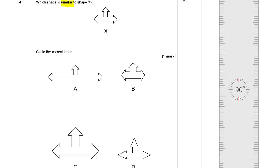Question 4: Which shape is similar to shape X? In mathematics, similar has a very specific meaning — it means exactly the same shape, but one is an enlargement of the other. Looking at the four possibilities, A is clearly ridiculously stretched out and B is very dumpy looking, so it's going to be C or D. Measuring the original shape, it's about 6 divisions tall and 12 wide — so it's half as tall as it is wide, a ratio of 1:2.